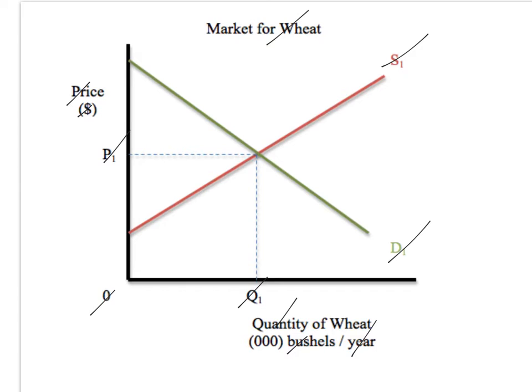Get this in your head: read the question and recognize it's a microeconomic supply and demand graph. Rule of 11, there it is. Then identify what type — in this case, we're going to take a look at minimum prices and price floors.